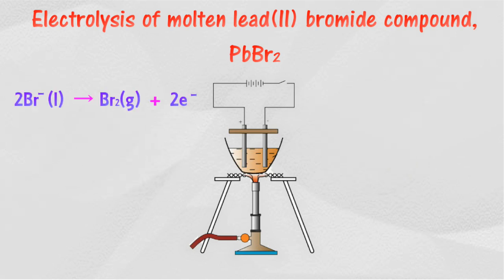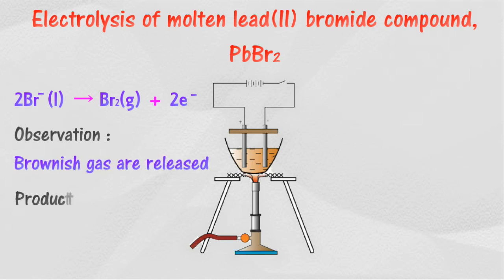In electrolysis of molten lead(II) bromide with carbon electrodes, bromide ions are attracted to the anode. Bromide ions move to the anode and are discharged by losing an electron to produce bromine gas, which is brown in color.